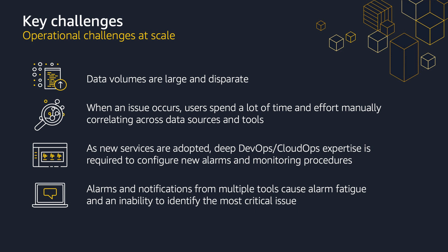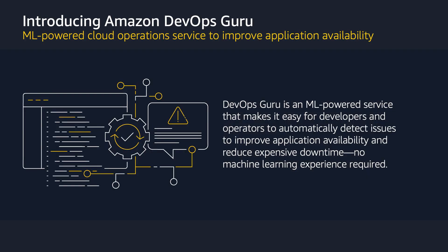Think about the number of alarms, metrics, and traces that an operator must track in order to find the root cause of an issue on a microservices environment with dozens or hundreds of applications. Then think about the number of alarms and thresholds you need to enable just to have full coverage. This is why Amazon DevOps Guru was created.